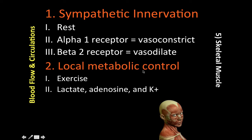Moving along to local metabolic control, the second factor in skeletal muscle blood flow regulation. Blood flow in skeletal muscle exhibits autoregulation and also active-reactive hyperemia. We saw autoregulation before in coronary and cerebral circulation, and now skeletal muscle circulation also exhibits autoregulation, specifically using local metabolic control.